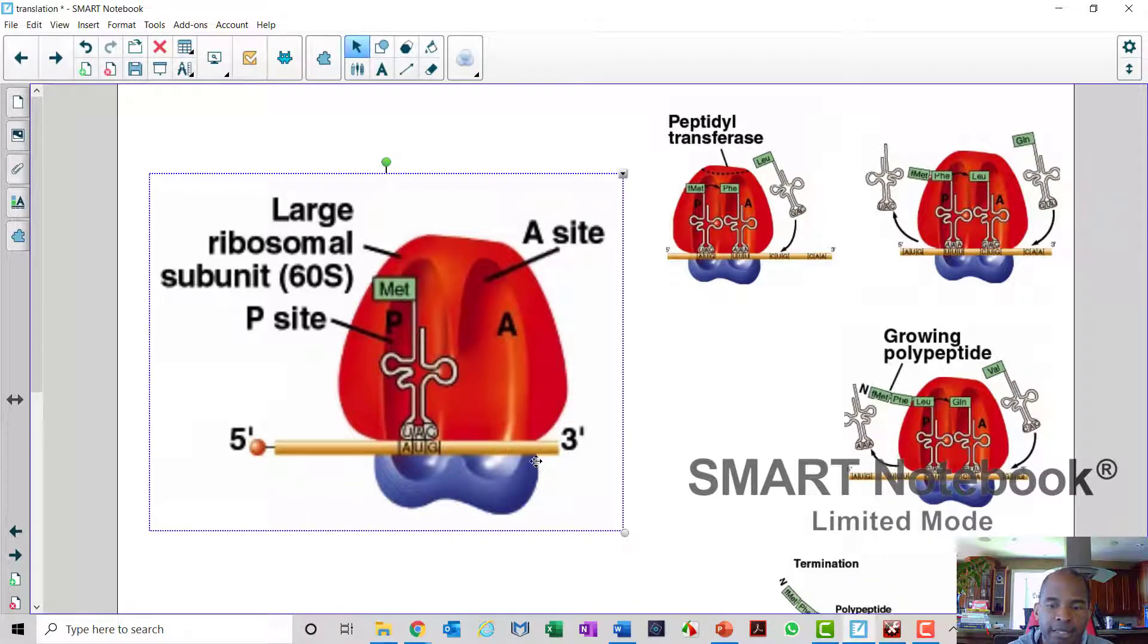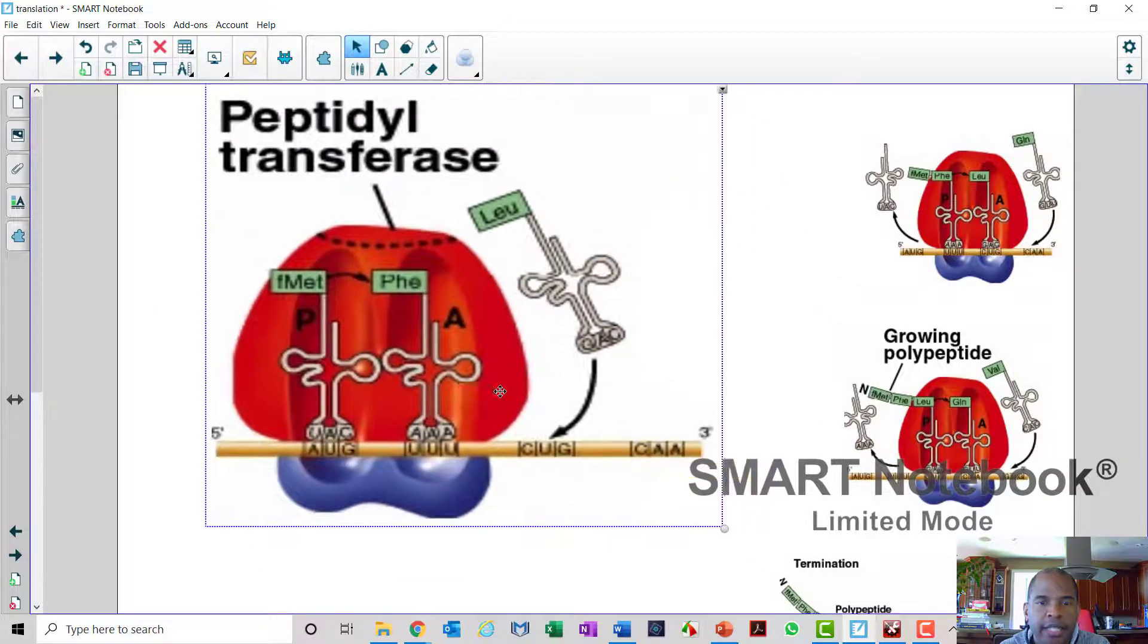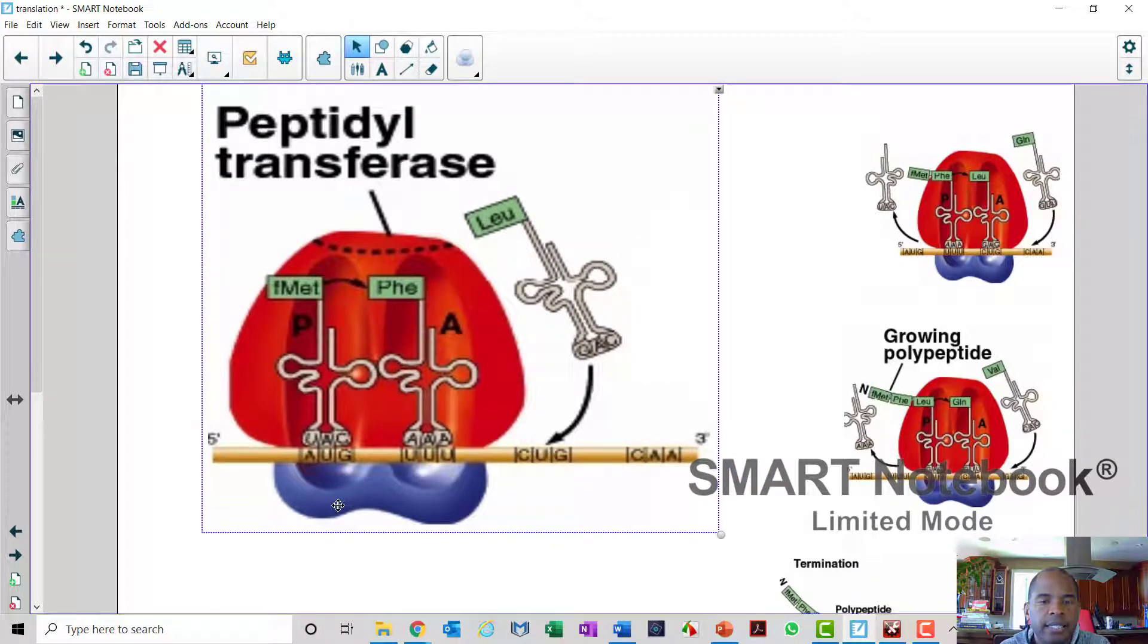So next what will happen is in will come a tRNA carrying the next amino acid in the chain. How does it know what the next amino acid is? Because the genetic code will tell you. UUU stands for phenylalanine and in it comes into the A site. Between the P site and the A site, there's going to be a facilitation of a reaction forming a peptide bond.